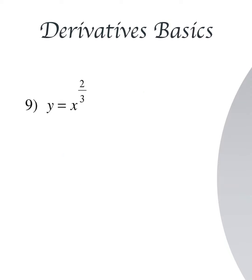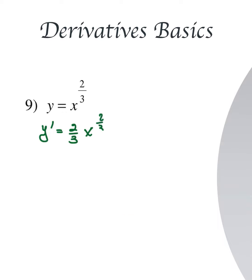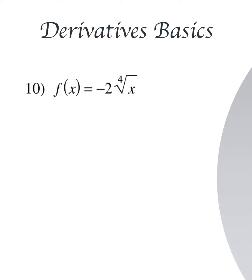Here we have y equal to x to the power 2/3. So y prime equals 2/3 times x to the power (2/3 minus 1), which is x to the power minus 1/3. We drop x to the denominator, giving y prime = 2 over 3x to the power 1/3.